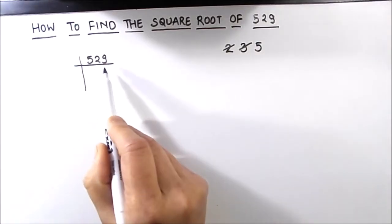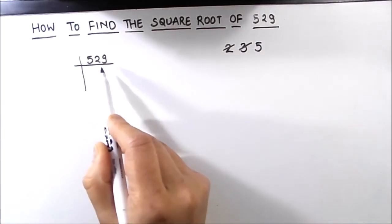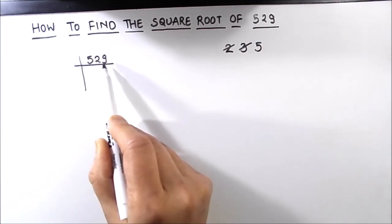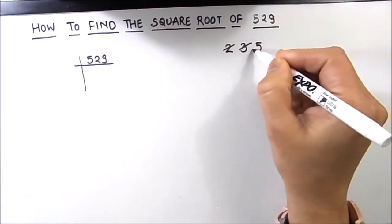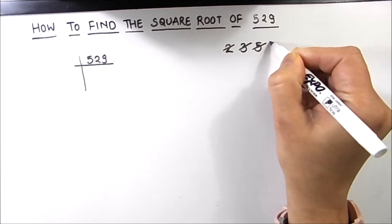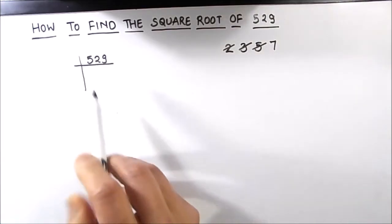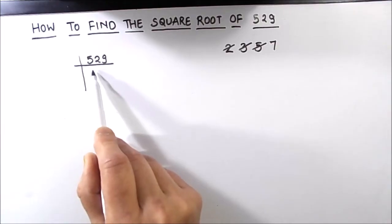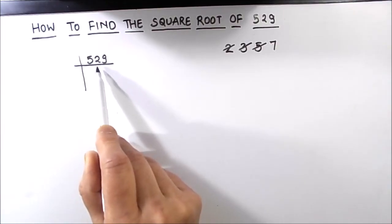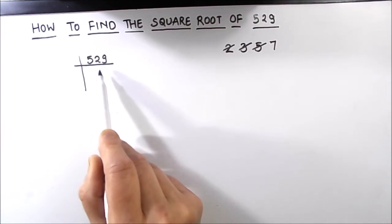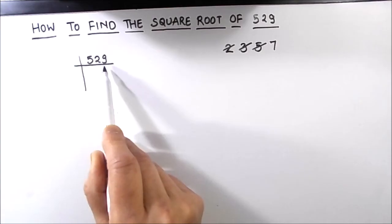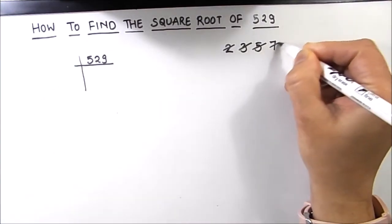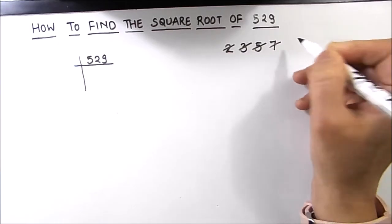The next prime number is 5. Since 529 does not end in 0 or 5, it is not divisible by 5. So 5 is also not a factor. Next prime number is 7. Checking: 7 times 7 is 49, remainder 3; this becomes 39, and 39 is not fully divisible by 7. So 7 is also not a factor.